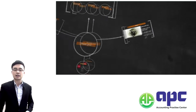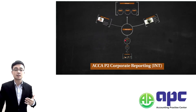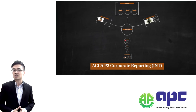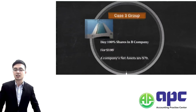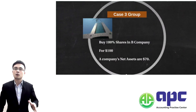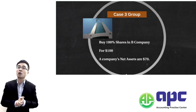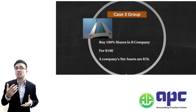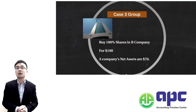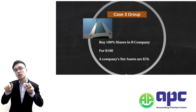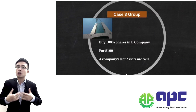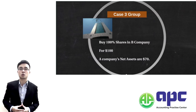We've learned those accounting standards and seen quite a few examples, and now let's put that into consolidation. For consolidation — unlike in Paper F7 where it's a simpler consolidated financial statement — in Paper 2 those adjustments and workings will continue to be tested as well.